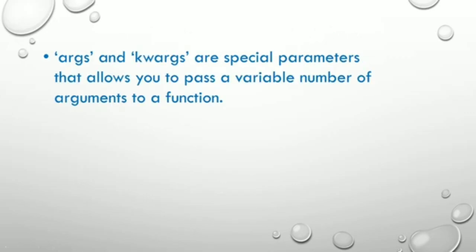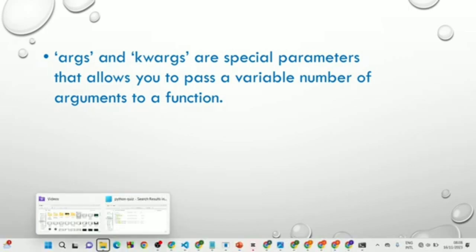*args and **kwargs are special parameters in Python that allow you to pass a variable number of arguments into a function. By variable number of arguments, we mean when you are creating a function and you do not know beforehand the number of parameters that will be passed into that function. You are going to use *args and **kwargs to do that.